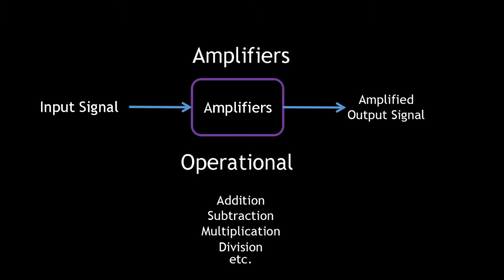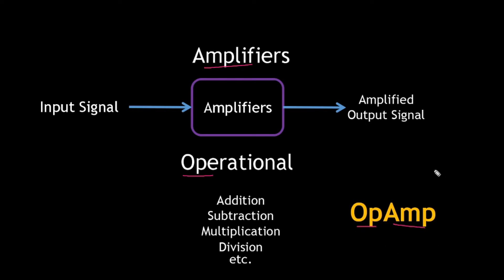Together, an operational amplifier is an amplifier used to perform various mathematical operations. It is also known as an op-amp — 'op' comes from 'operational' and 'amp' comes from 'amplifier.' Throughout the entire course we will use this term to refer to operational amplifiers.